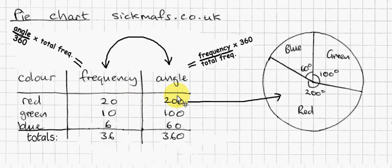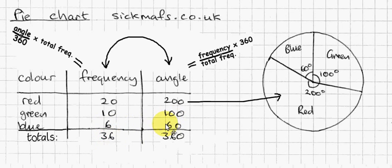You might want to check out the fractions video that will explain how I did that. So 20 out of 36 times 360 is 200. Similarly, 10 out of 36 times 360 is 100, and 6 out of 36 times 360 is 60 degrees. So those angles go in the table: 200 for red, 100 for green, and 60 degrees for blue.